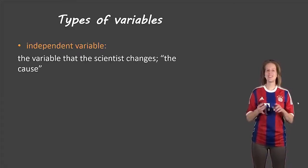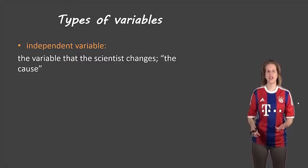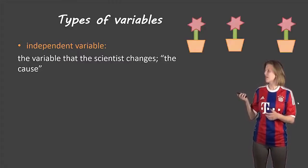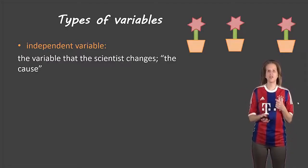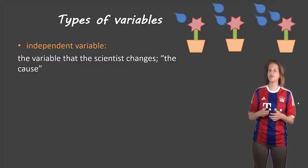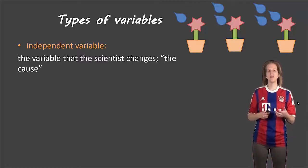The first one is the independent variable. The independent variable is the thing that the scientist changes. So if we're looking at a bunch of plants and we give the first one a certain amount of water, the next one twice the amount of water, and the third one three times the amount of water, then the thing that we are changing is the amount of water. And sometimes this is known as the cause.